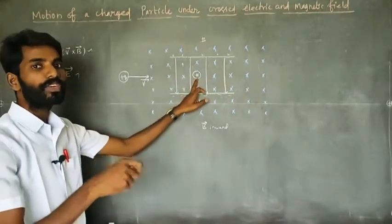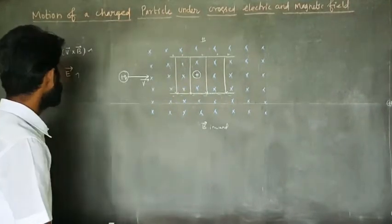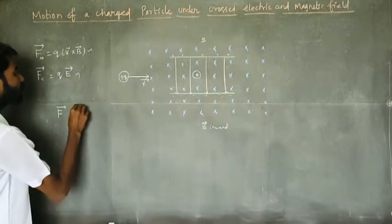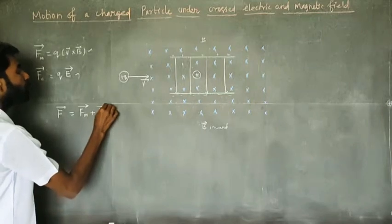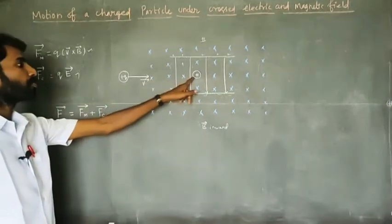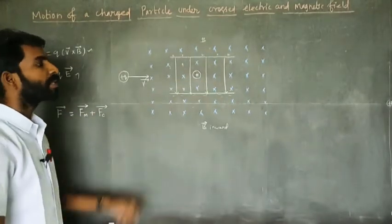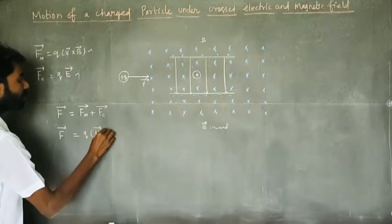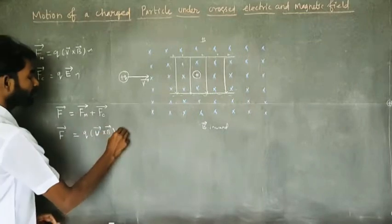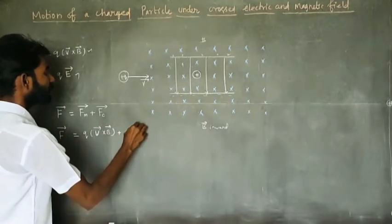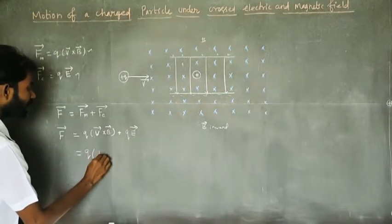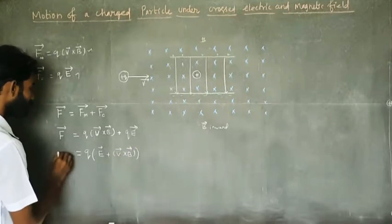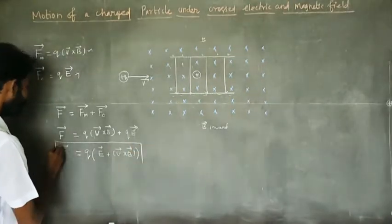The charged particle experiences a net force from both fields. The net force vector on the charged particle is equal to the magnetic force plus the electric force. In this region, with both electric and magnetic fields, the total force experienced is F = q(E vector + v vector cross B vector). This is the net force experienced by the charged particle in both fields.